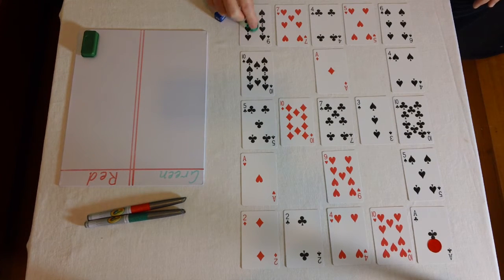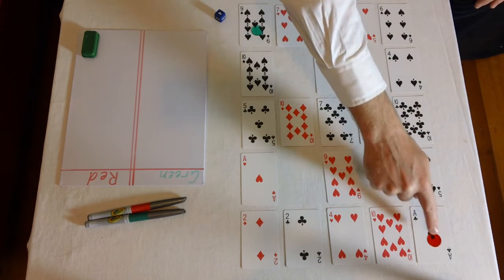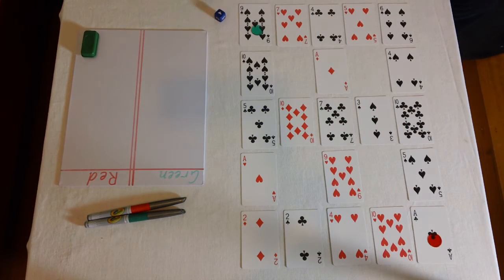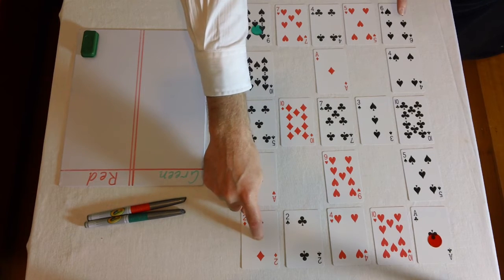Each player starts on a corner, so I've got a green player here and a red player there. If you're going to play with three or four players, you'd have a player there and there as well.